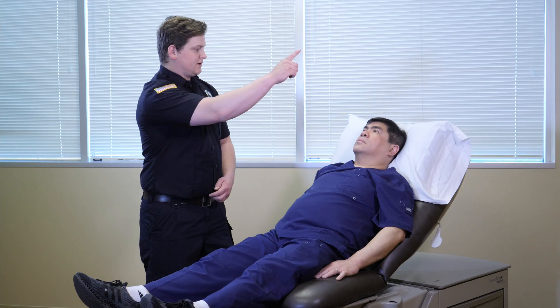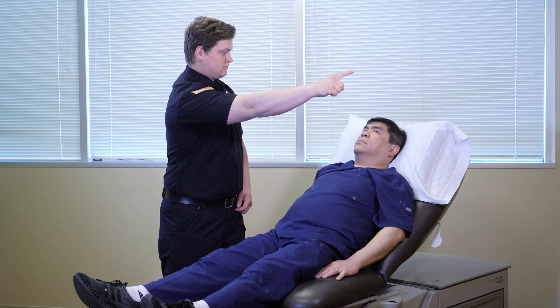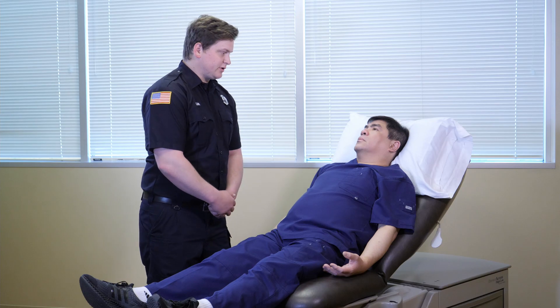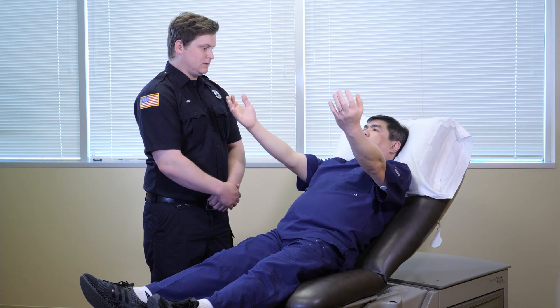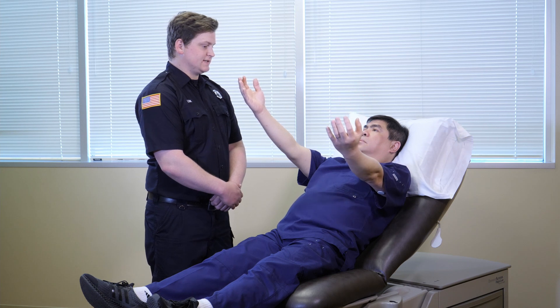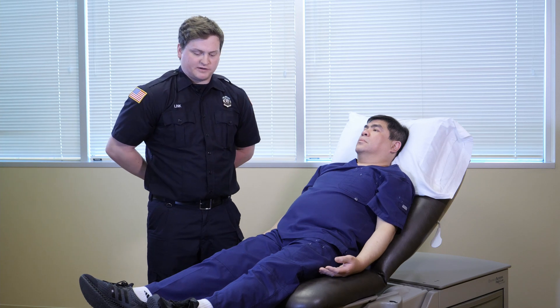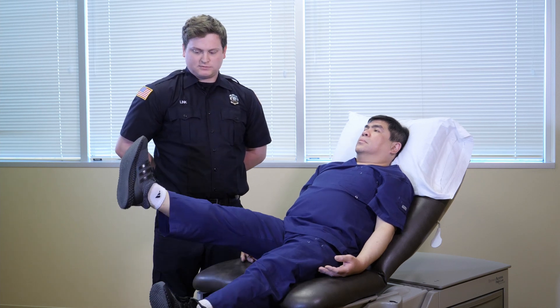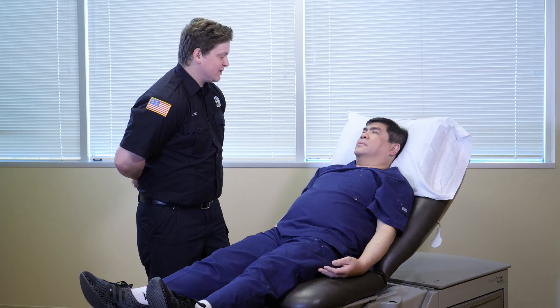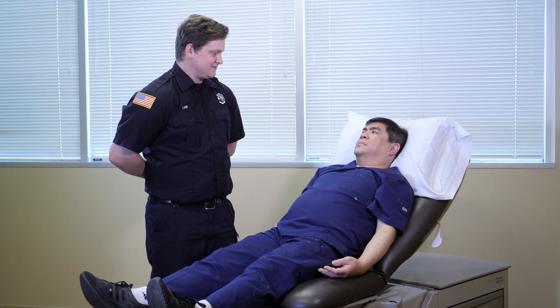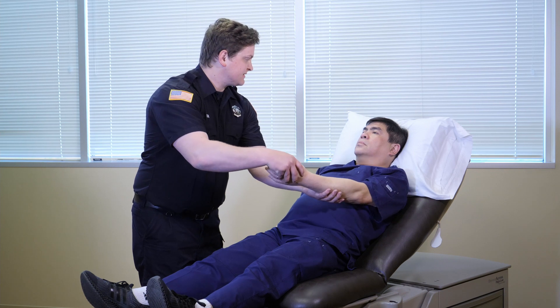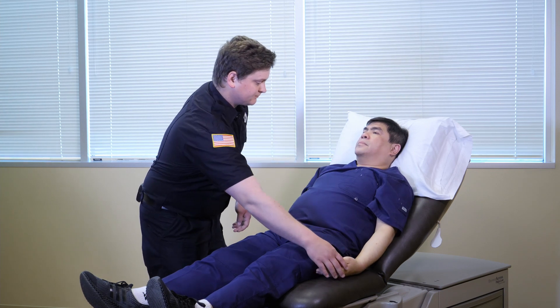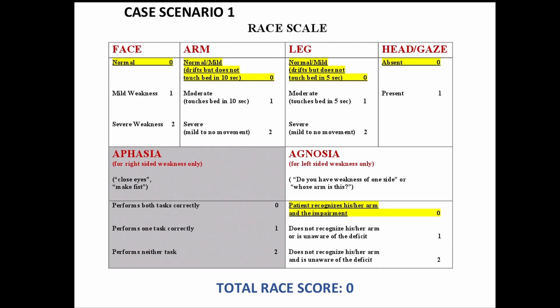Case 1: The examiner asks the patient to show a big smile, follow a finger with their eyes, hold up both arms for ten seconds, and lift each leg for five seconds. The patient reports weakness on the left side. Agnosia is tested — the patient correctly identifies the arm as 'My arm.' RACE scale score is zero. Agnosia was tested because the patient had left-sided weakness.